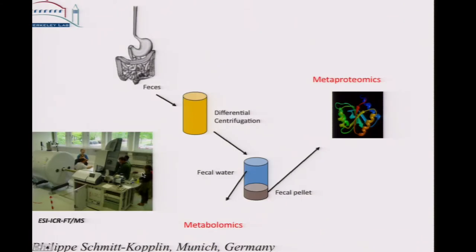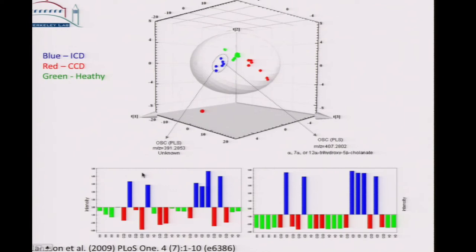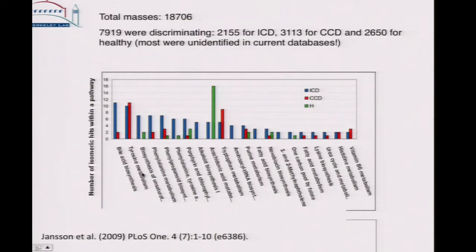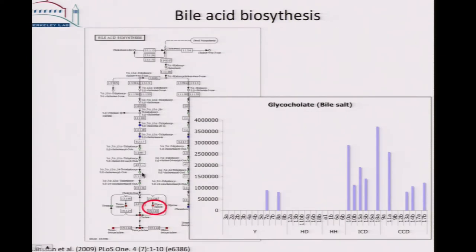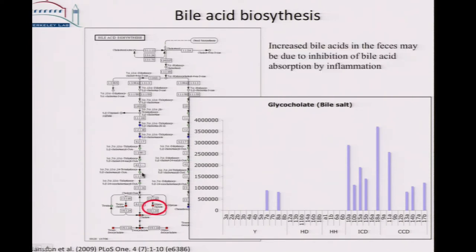Looking at the metabolites from the same samples — the pellet was sent for proteome analysis and the fecal water was sent to Germany for mass spec analysis of the metabolites — we again see the same clustering pattern: red for colonic Crohn's disease, blue for ileal Crohn's disease, and green for healthy. We had so many differentiating metabolites: over 8,000 metabolites significantly differed between groups, out of over 18,000 metabolites, and most are unidentified. One example is bile acid biosynthesis, which was higher in Crohn's disease, possibly due to inhibition of bile acid absorption by inflammation.